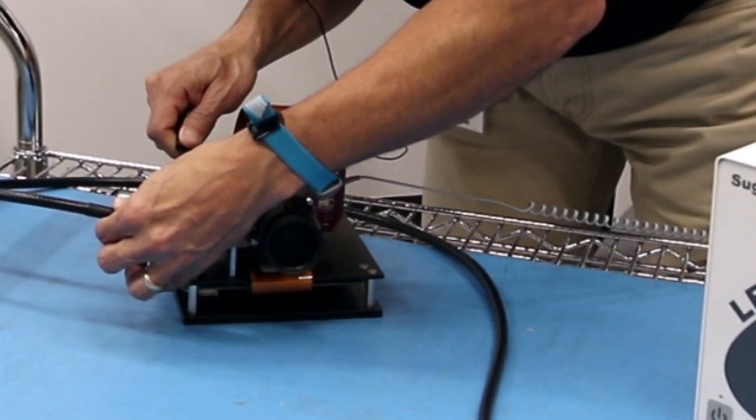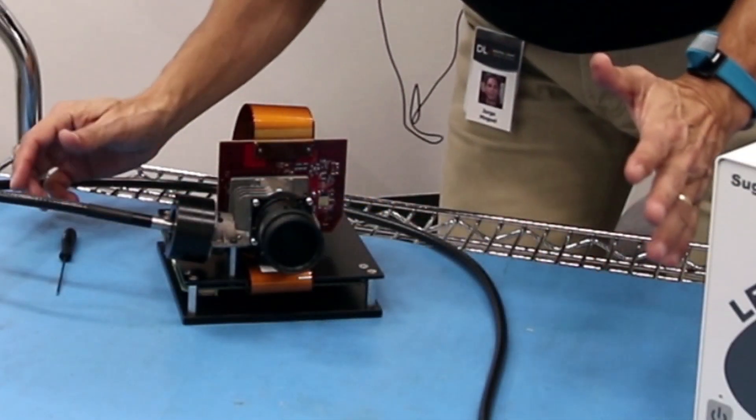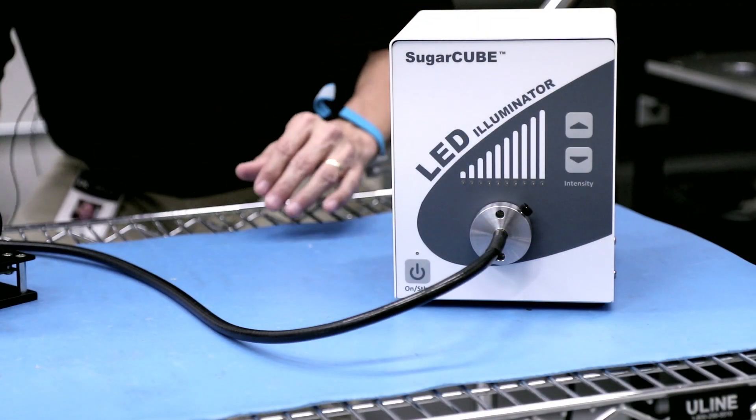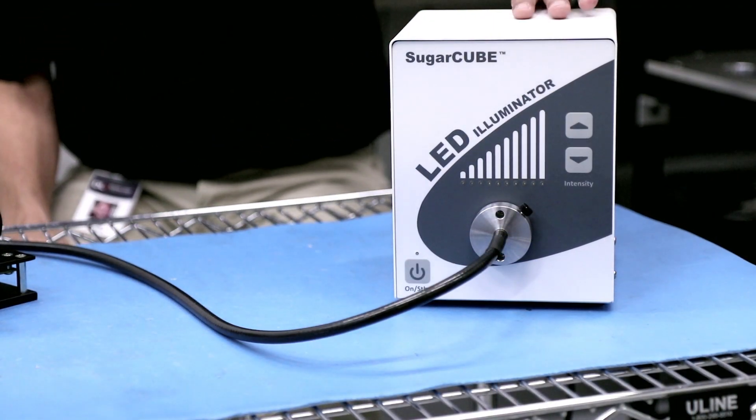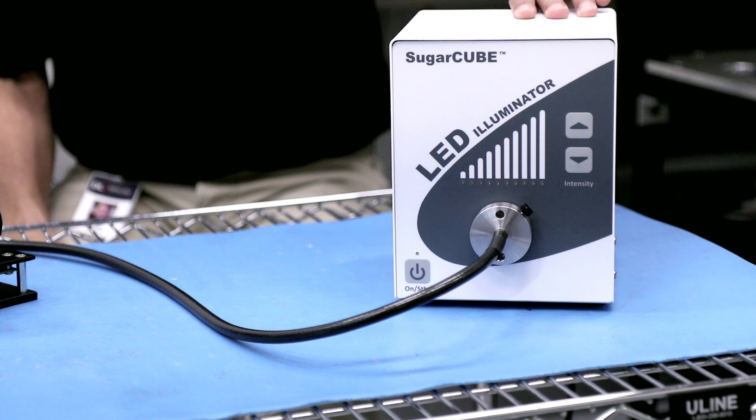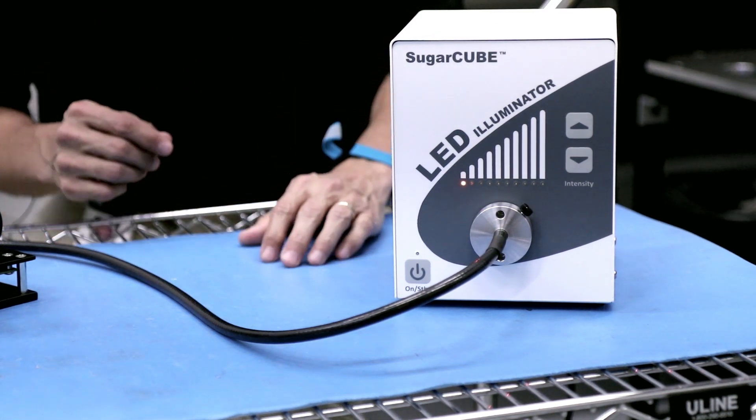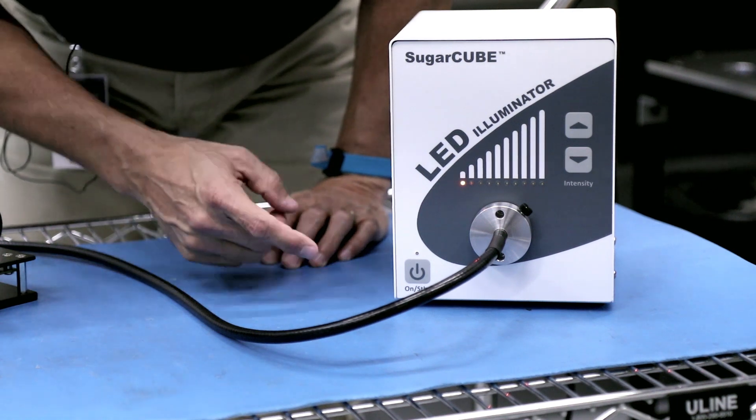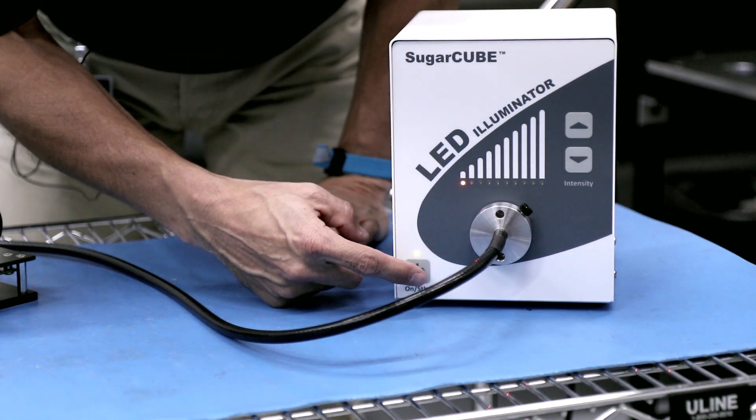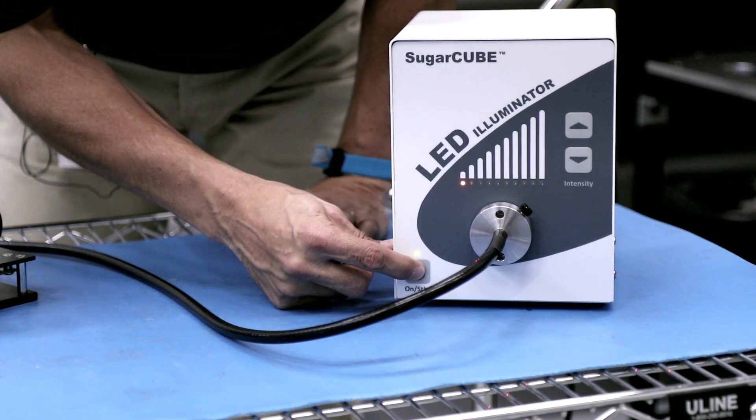Now that your Sugarcube is coupled to the DLI 6500 ray fiber optics bundle all that's left to do is power it up. There's a main switch on the back of the Sugarcube as well as a standby on off button on the front of the system. Go ahead and turn on the rear main switch and front on button.